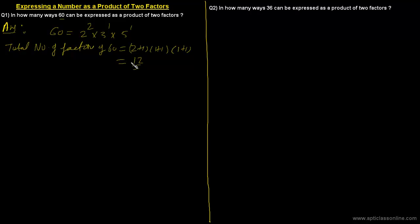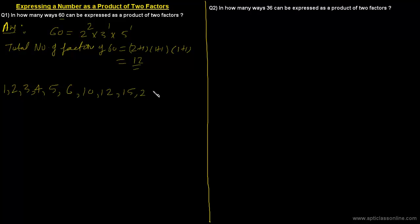There are 12 total factors of 60. Let's list these 12 factors: 1, 2, 3, 4, 5, 6, 10, 12, 15, 20, 30, and 60.